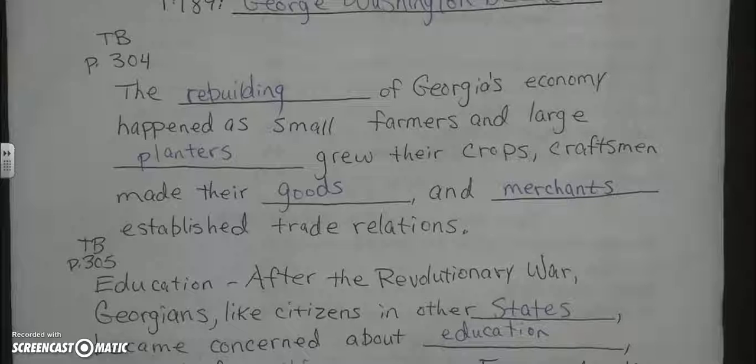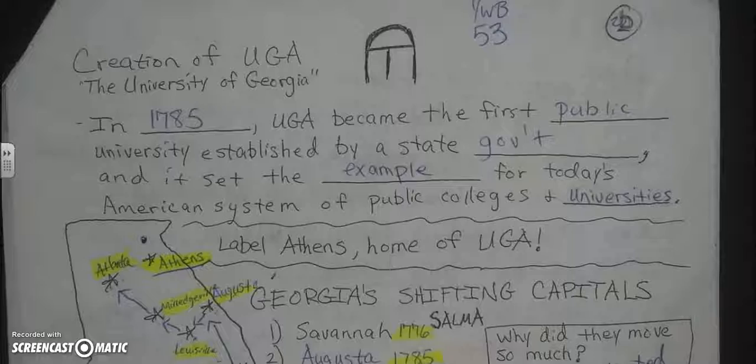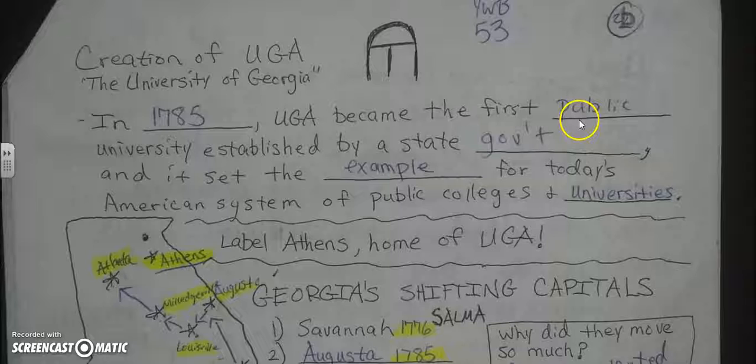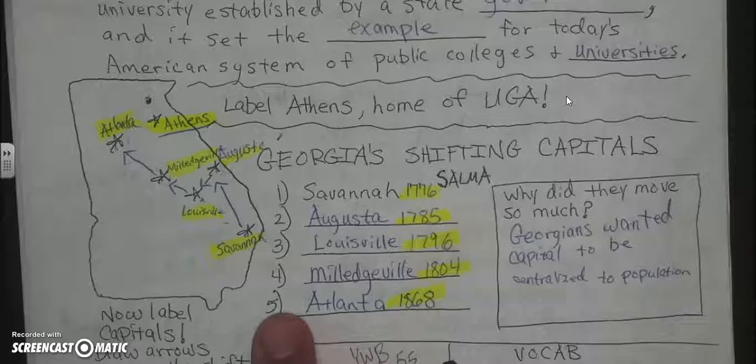The rebuilding of Georgia's economy happened as small farmers and large planters grew their crops, craftsmen made their goods, and merchants established trade relations after the Revolutionary War. Georgians, like citizens in other states, became concerned about education, especially for white men. The creation of UGA was very important because in 1785 UGA became the first public university established by a state government, setting the example for today's American system of public colleges and universities.